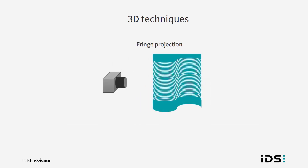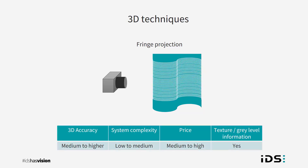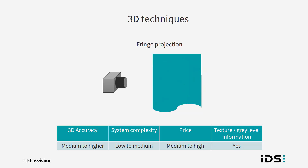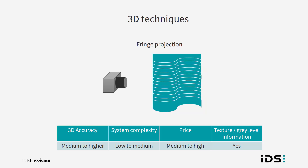Fringe projection triangulation is based on structured light and projects a series of patterns onto the scene, and the 3D data is computed over a series of images. This technique can also produce high accuracy, especially when using small scale patterns. There's no motion required in order to complete a scan and it's possible to also acquire grey level information. However, this method is less tolerant to movement of the target and takes time to acquire the data.